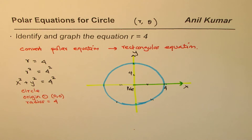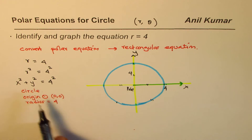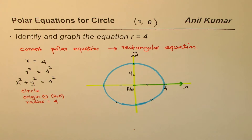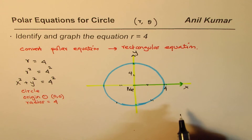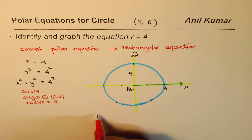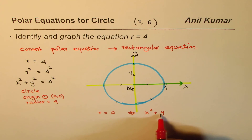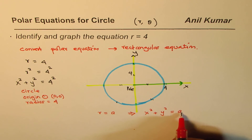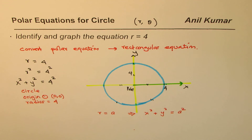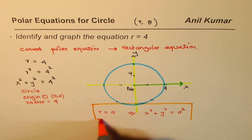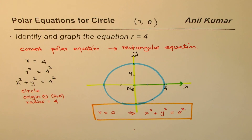Every point four units away from the pole makes a circle, which in the rectangular equation system is written as x squared plus y squared equals 4 squared. In general, r equals a is equivalent to x squared plus y squared equals a squared, and it will always represent a circle with radius a on the graph.